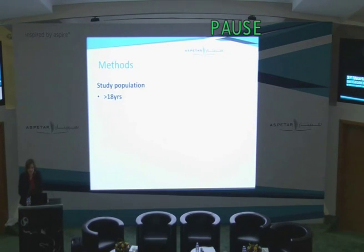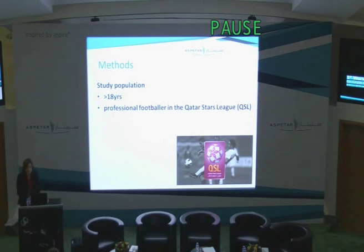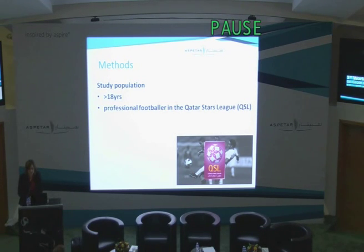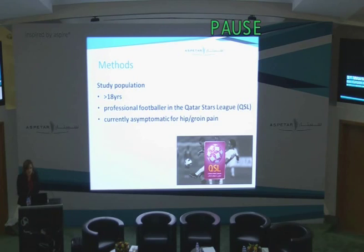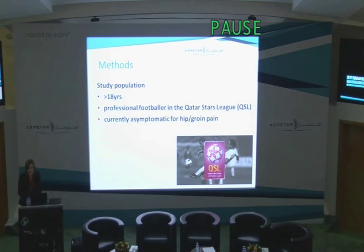Our study population are greater than 18-year-old professional footballers in the Qatar Stars League football population. We've used mostly Division I footballers for this study and also for the prospective study, but we also have two Division II clubs from this year. The data for the normative profiles only includes those athletes that were asymptomatic for hip and groin pain at the time of screening.